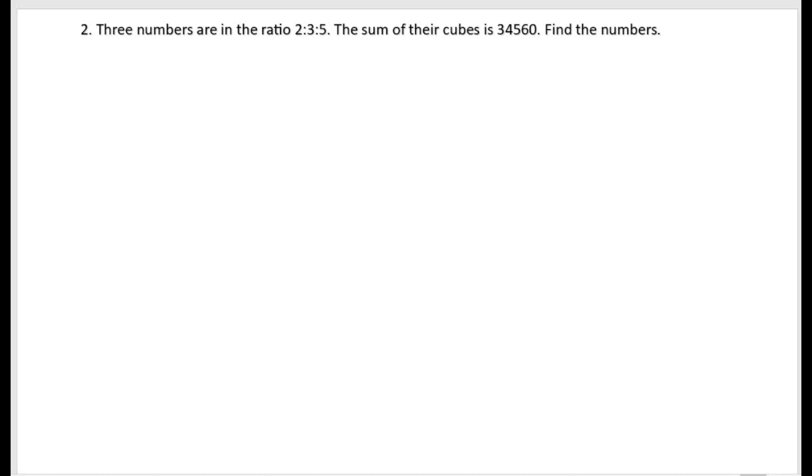Second problem: Three numbers are in the ratio 2 is to 3 is to 5. The sum of their cubes is 34560. Find the numbers. So what they are saying is that the three numbers are in the ratio 2:3:5. They are not saying that they are the numbers, so we need to find out the numbers. So for that, let the numbers be 2x, 3x, and 5x. And according to the given condition, the sum of the cubes is 34560.